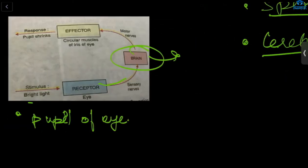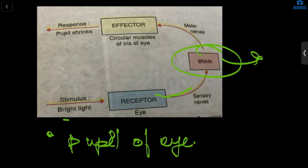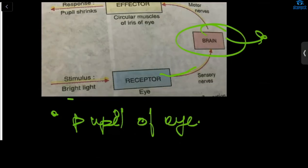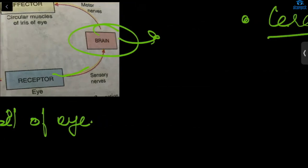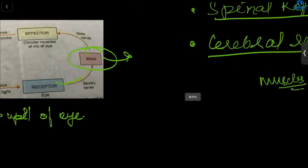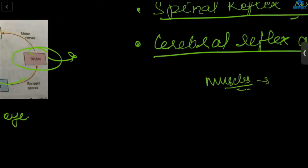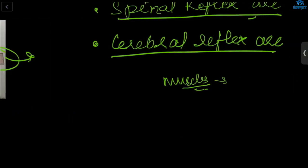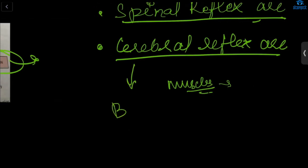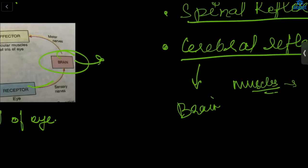Safiya asked for clarification on the cerebral reflex arc. Whenever you move to a bright place, your pupil — the black part of the eye — automatically shrinks. This is a reflex action, but the pathway is cerebral because the brain is involved and is nearest to the eye. In the case of the hand, the brain would take too long to reach, so the spinal cord is involved instead.